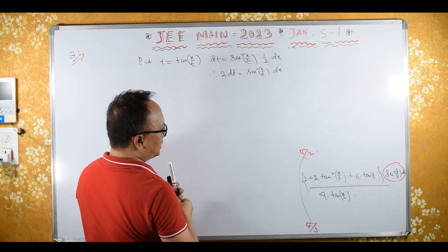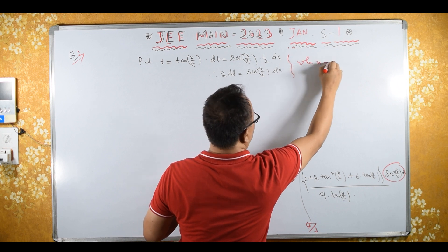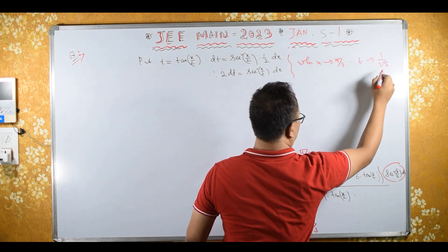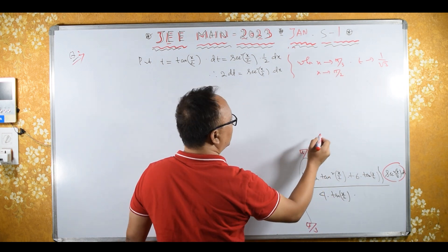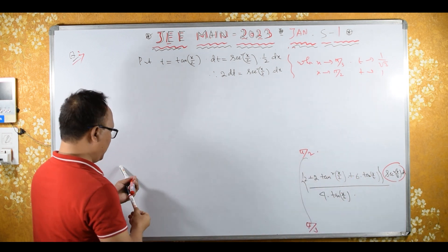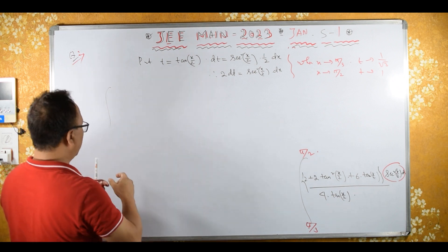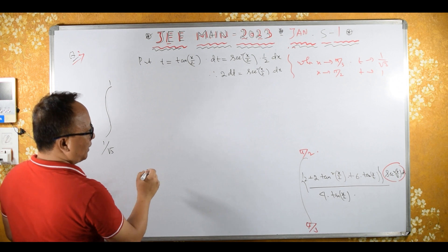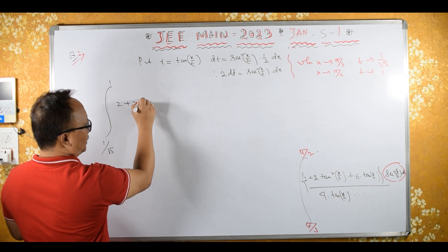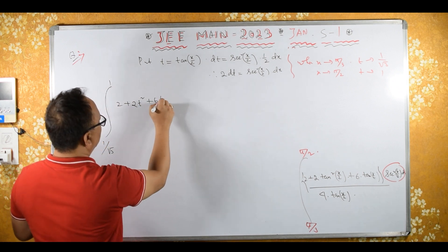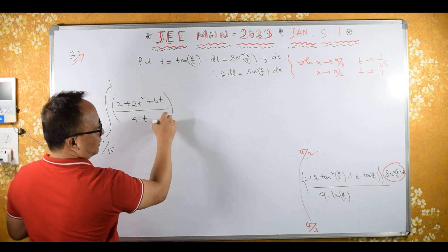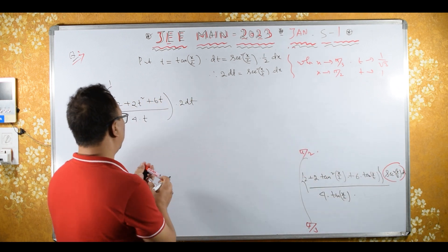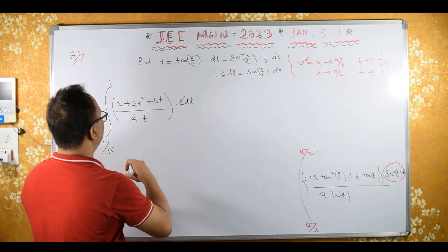Let's change the limits. When x tends to π/3, x/2 tends to π/6, so t tends to tan(π/6) which is 1/√3. When x tends to π/2, t tends to 1. Substituting all variables, this equals the integral from 1/√3 to 1 of: 2 plus 2t² plus 6t upon 4t, into 2 dt. The sec²(x/2) dx becomes 2 dt, so the 2s cancel and we get a factor of 1/2 outside.